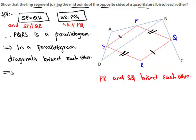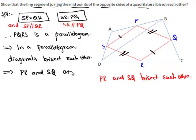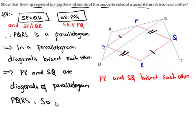The diagonals of parallelogram PQRS are PR and SQ. Therefore PR and SQ are the diagonals of the parallelogram PQRS, so they bisect each other. And this is the proof of the statement. Thank you.